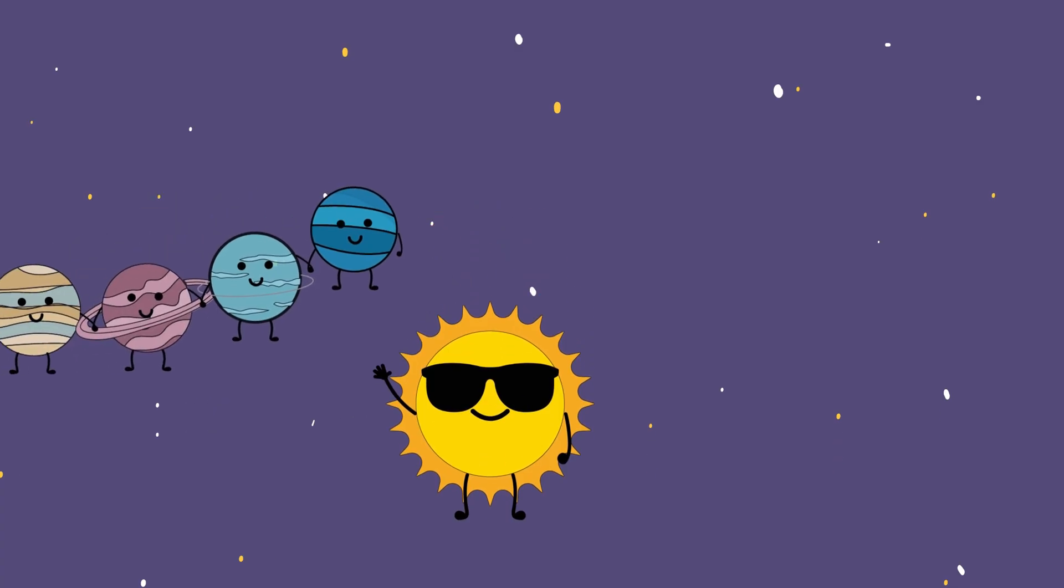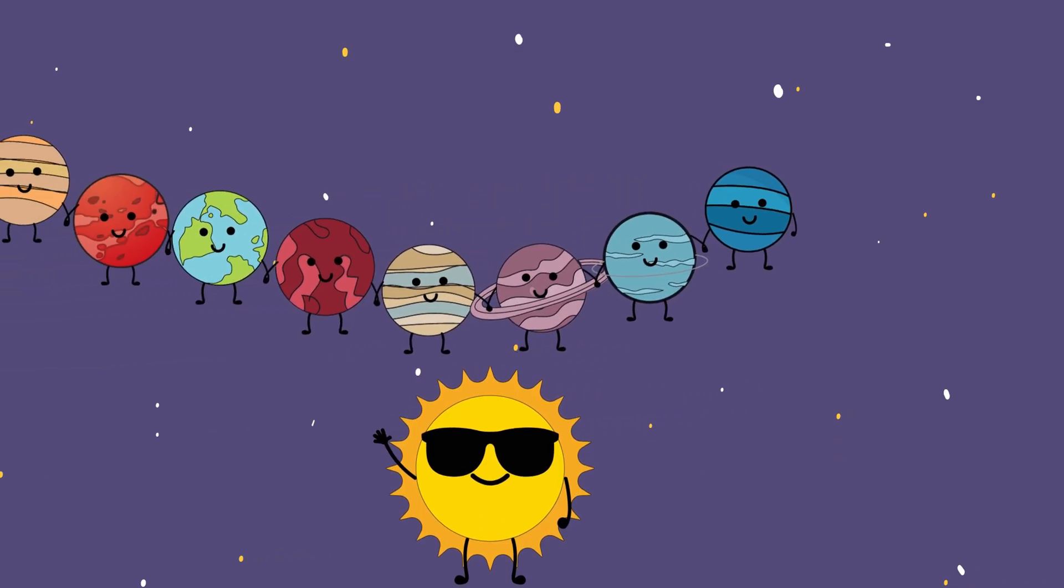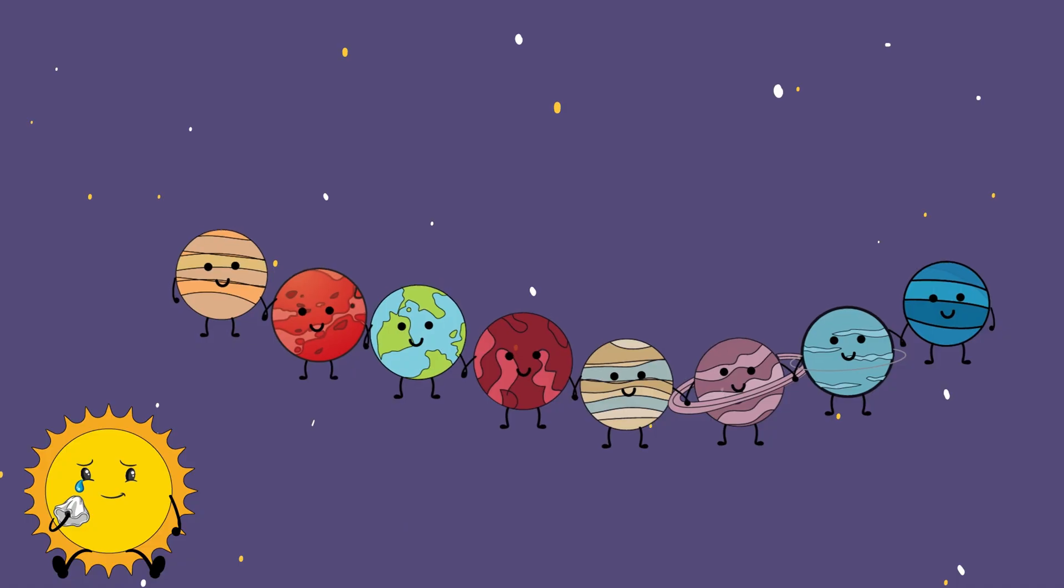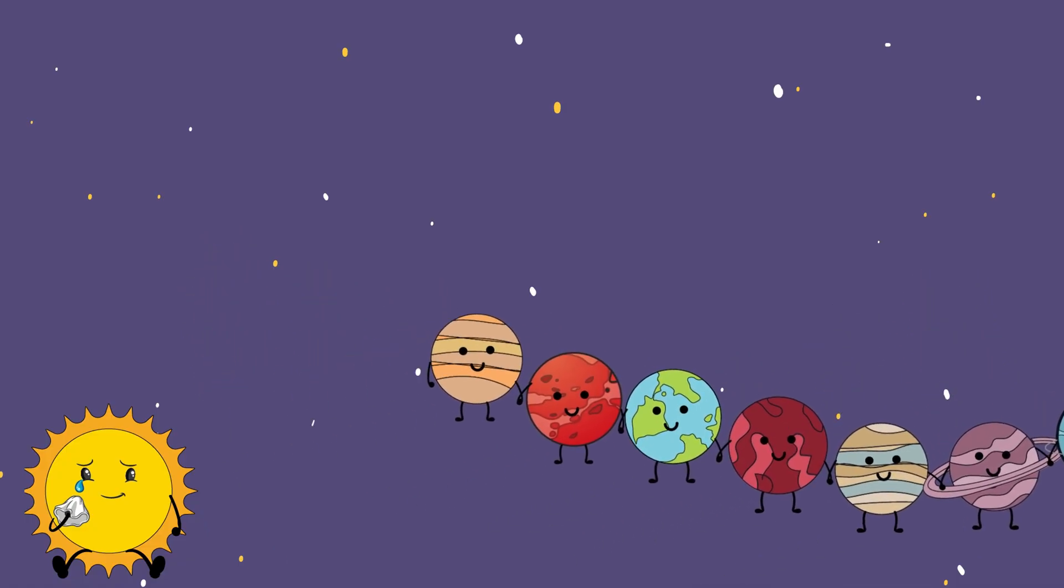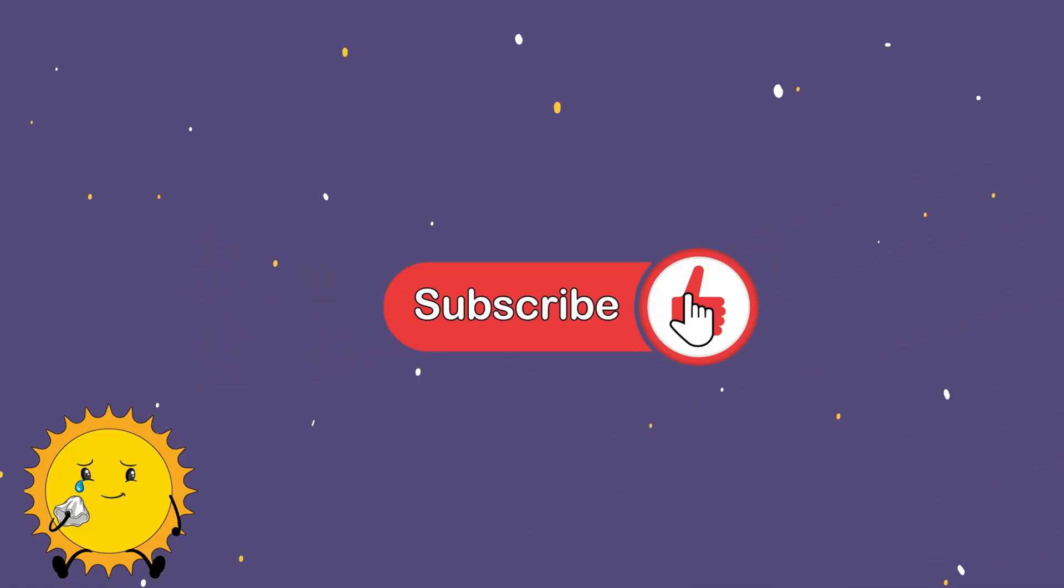The sun might be the brightest thing in the sky. But being it? Sucks. Let us know in the comments. Which planet treats the sun the worst? Hit like, subscribe, and we'll see you next time. Assuming a solar flare doesn't wipe out the grid.